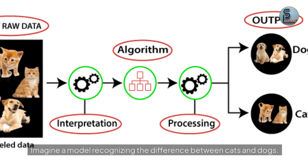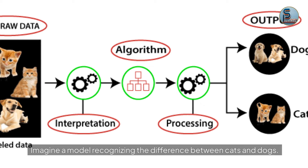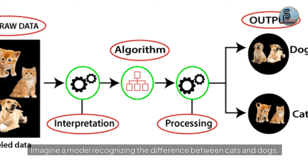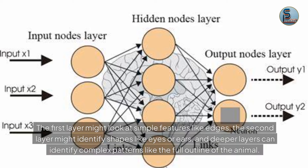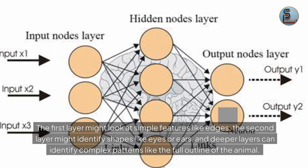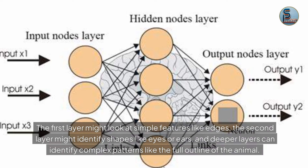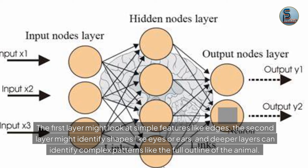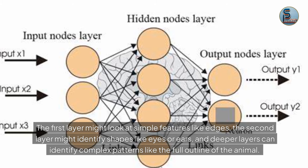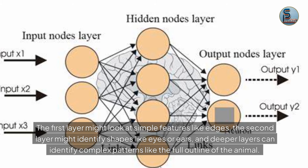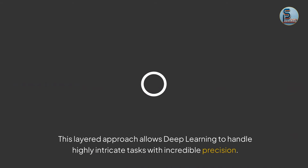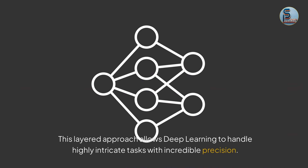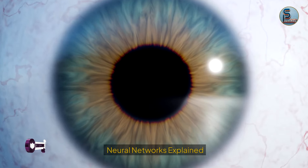Imagine a model recognizing the difference between cats and dogs. The first layer might look at simple features like edges. The second layer might identify shapes like eyes or ears. Deeper layers can identify complex patterns like the full outline of the animal. This layered approach allows deep learning to handle highly intricate tasks with incredible precision.